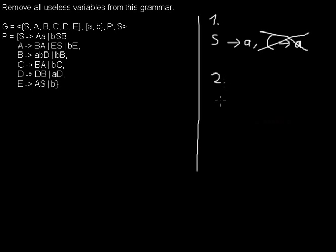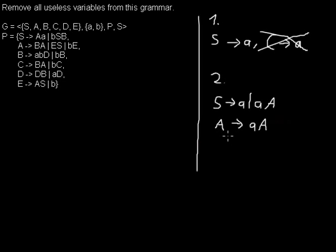The other case you can have: maybe you have a variable that you can reach from the start symbol, let's say A, but this variable just goes into a loop. If there's no other rule, you will never find an end when you try to do a derivation with A. So in every finite word, you won't have any A in it because you cannot generate a finite word with A. In this case, A would be useless too, and so would this part of the rule.